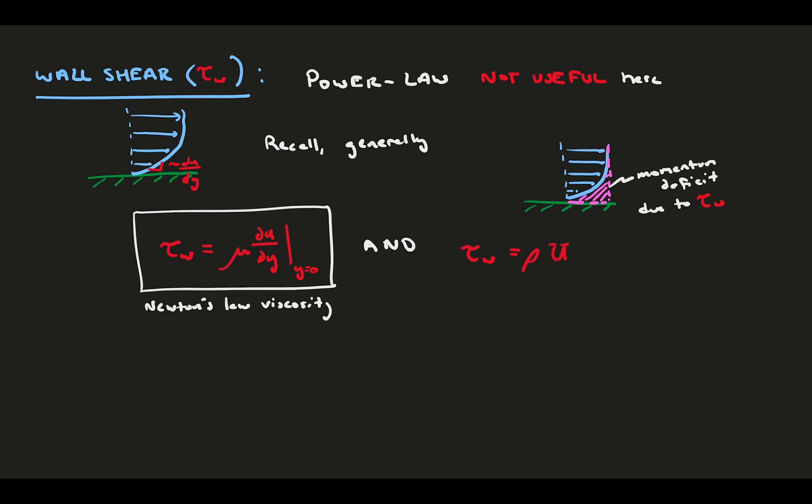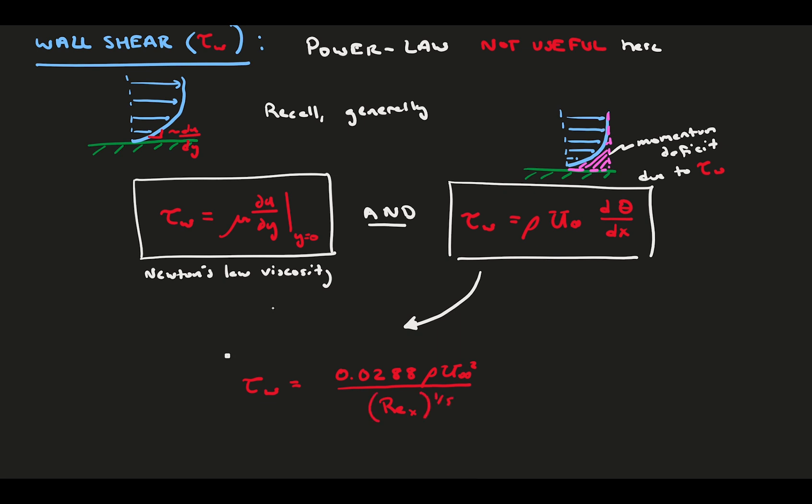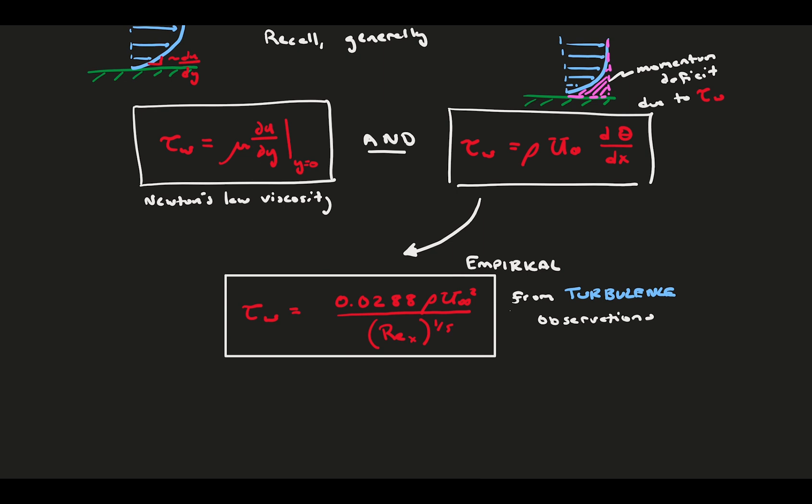And if we did a free body diagram on the flow or a control volume analysis, the only place the flow feels a force is due to the wall and the viscous shear. So naturally, this momentum deficit change has to be a function of the wall shear. With some relatively simple exploration and dimensional analysis, we could find that there is a simple relation to the wall shear and the spatial derivative of the momentum thickness. And the benefit here is that we now define the flow shear as a function of the momentum thickness, which is something we already know from the power law. Here, notice the wall shear is a function of the flow density, velocity, and Reynolds number.